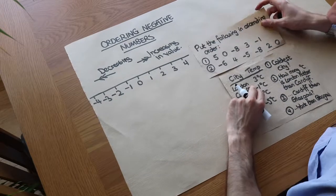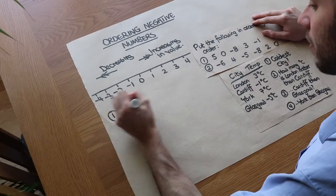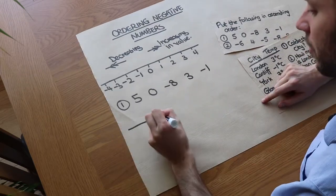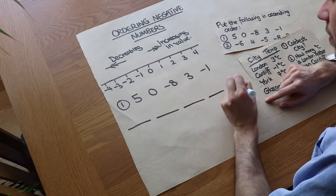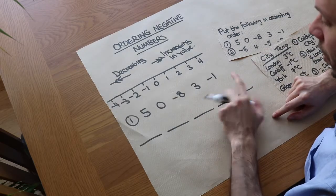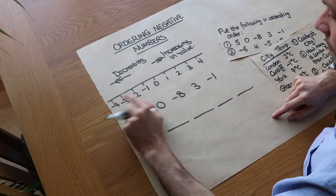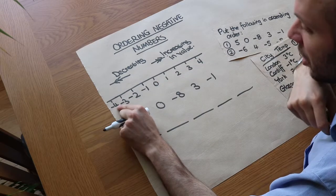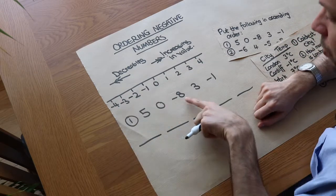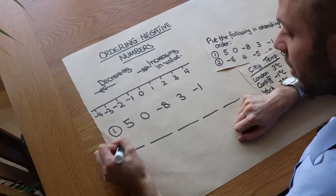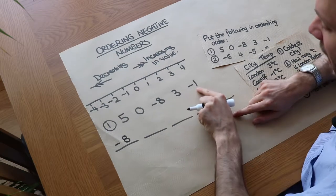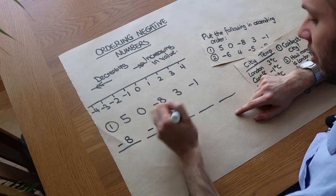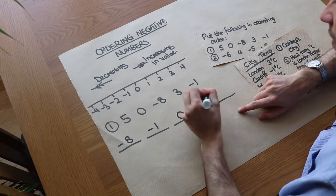We can use that to order numbers. Let's say we've got five, zero, minus eight, three, and minus one, and we want to put them in ascending order of value. Which number has the smallest value? It's going to be one of the negatives. To get the smallest value we want to be as far from zero as possible, meaning the number after the minus must be as large as possible — that's minus eight. So minus eight goes first, then minus one, then zero, then three, then five.